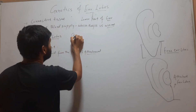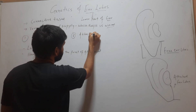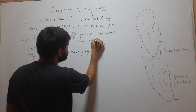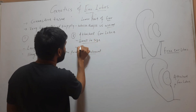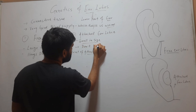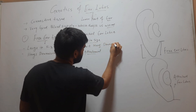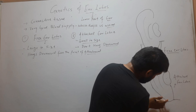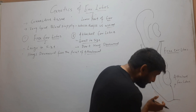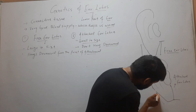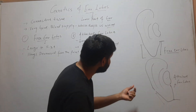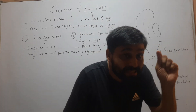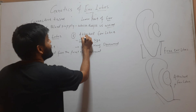The second type is attached ear lobes. They are small in size and they do not hang downward from their point of attachment. Such ear lobes, which end where the point of attachment ends, are called attached ear lobes.